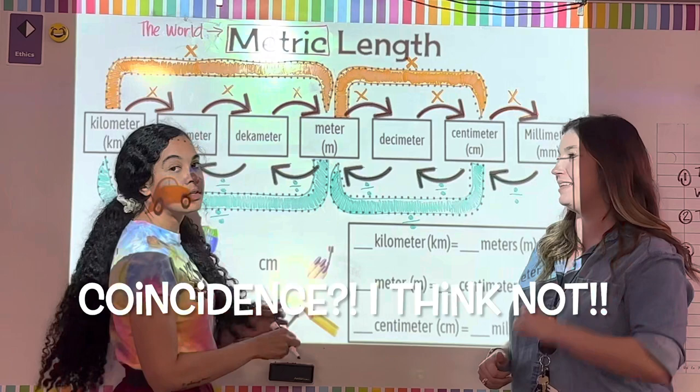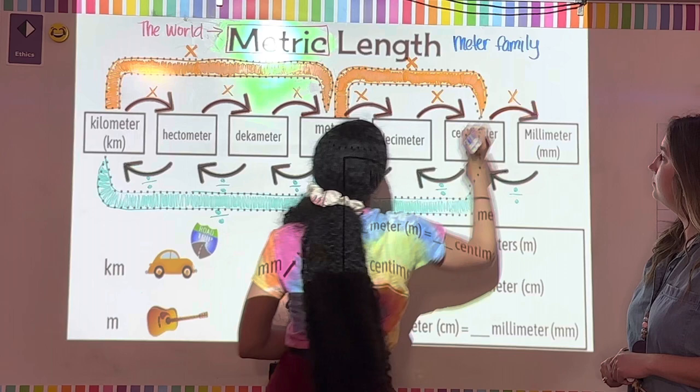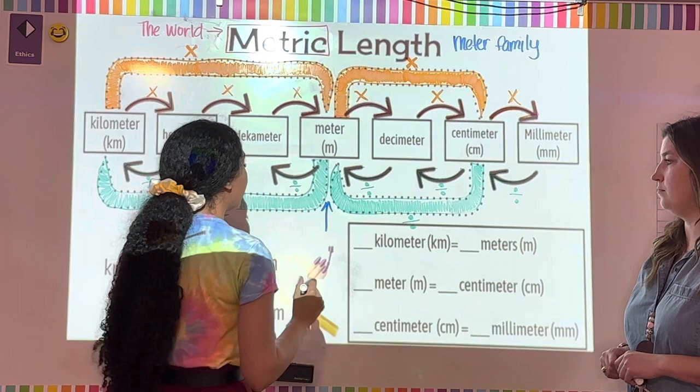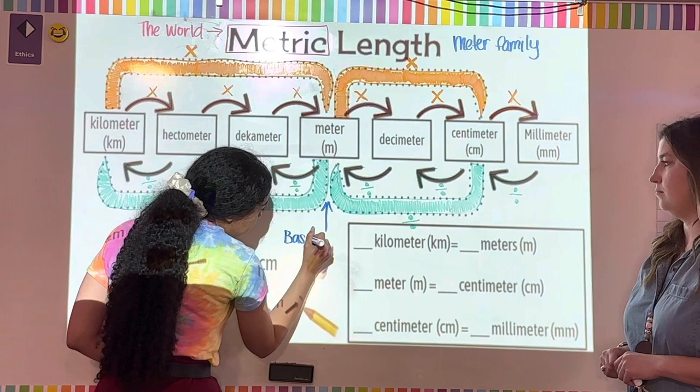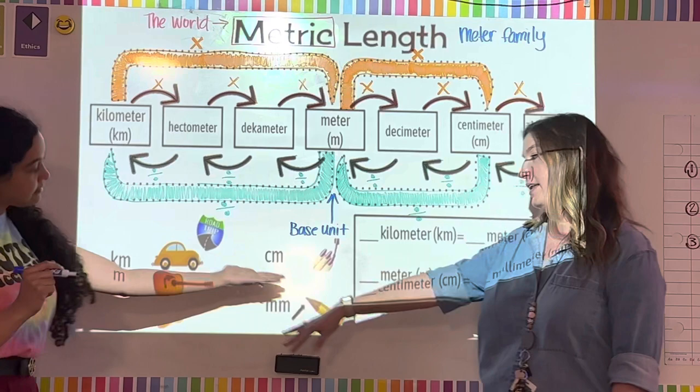We're going to put 'meter family' on your notes. Then come over and find where it says meter on the highway, draw an arrow, and write that this is the base unit — your stage. Press play whenever you're ready to continue. Now that your paper is ready and looks just like our board, we're going to talk about what each of the pictures represent.